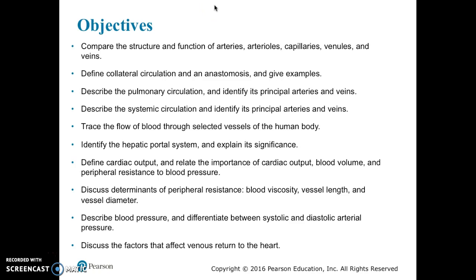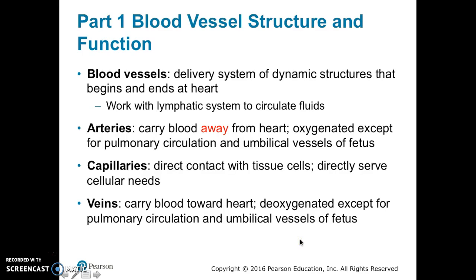Define cardiac output and relate the importance of cardiac output, blood volume, and peripheral resistance to blood pressure. Discuss determinants of peripheral resistance: blood viscosity, vessel length, and vessel diameter. Describe blood pressure and differentiate between systolic and diastolic arterial pressures, and discuss the factors that affect venous return to the heart. We will first begin with blood vessel structure and function.